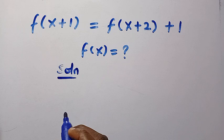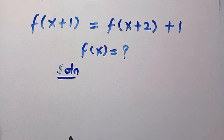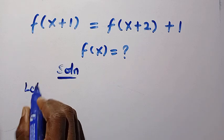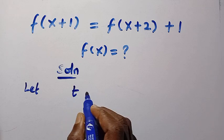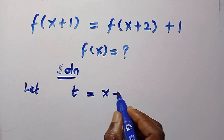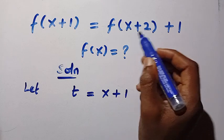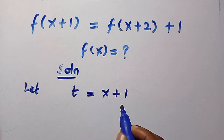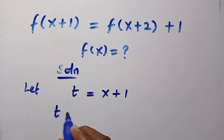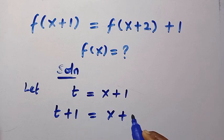I am going to apply the substitution method. Here we have x plus 1 and x plus 2. Suppose we let t equal x plus 1. Then to obtain x plus 2, we add 1 to both sides, which gives us t plus 1 equals x plus 2.